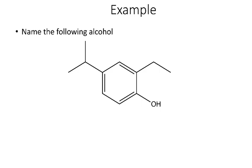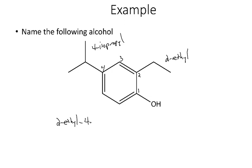For the final example, I have a benzene ring with an OH, so the parent is phenol. Numbering from the OH at position 1, I choose the direction that gives the lowest locants: going 1, 2, 3, 4 gives substituents at positions 2 and 4, whereas going the other way gives positions 4 and 6 — so I number 1 through 4. The substituents are a 2-ethyl and a 4-isopropyl group, giving the name '2-ethyl-4-isopropylphenol'. As with cyclic alcohols, the OH position does not need to be stated explicitly.